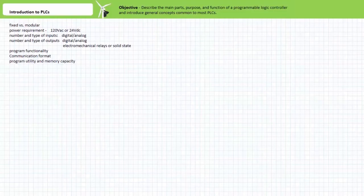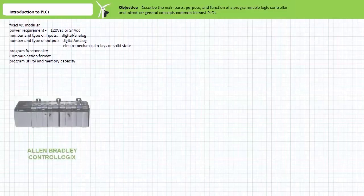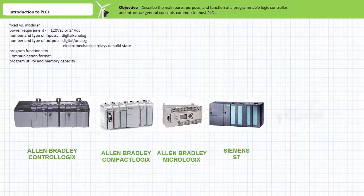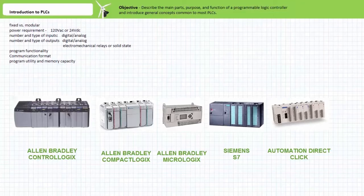Examples of advanced modular PLCs devices include the Allen Bradley control logics, compact logics and micrologics series, the Siemens S7 family and the automation direct click series.